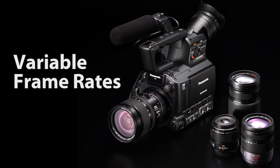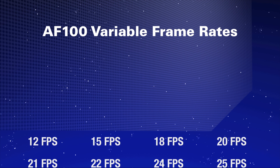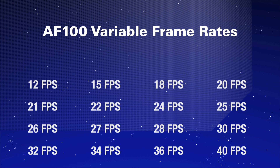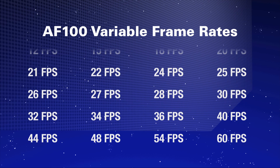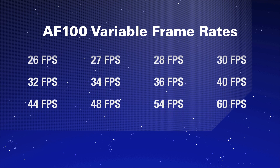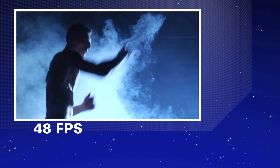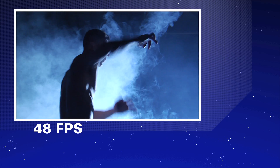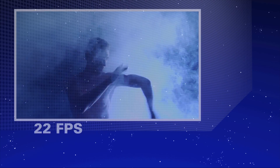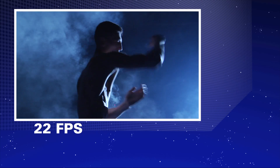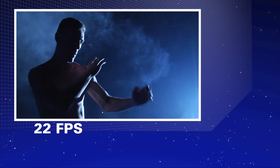The AF100 offers variable frame rates in 1080p between 12 frames per second and 60 frames per second in 20 steps. Some key ones in that range include 48 frames — a nice slow-motion effect without being too slow — and 22 frames, which adds a fast motion feel to action sequences, making your shots really take impact. These frame rates are not available in our competitors' cameras.